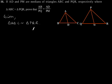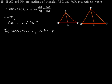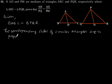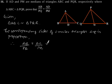Now we know that the corresponding sides of a similar triangle are in proportion. Therefore, AB by PQ is equal to AC by PR, which is equal to BC by QR.